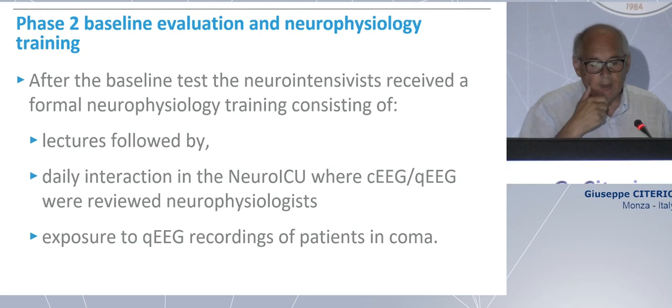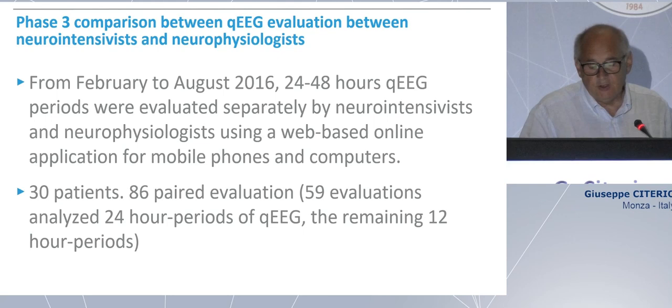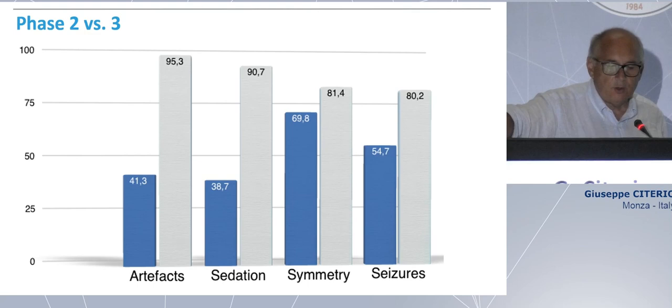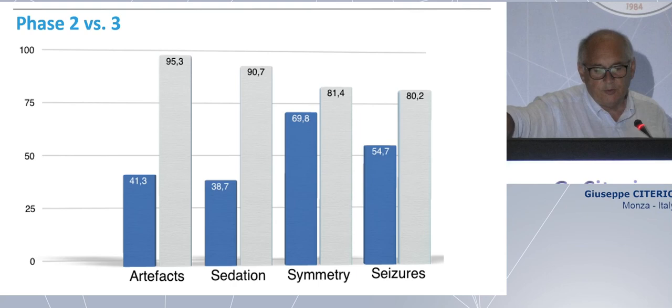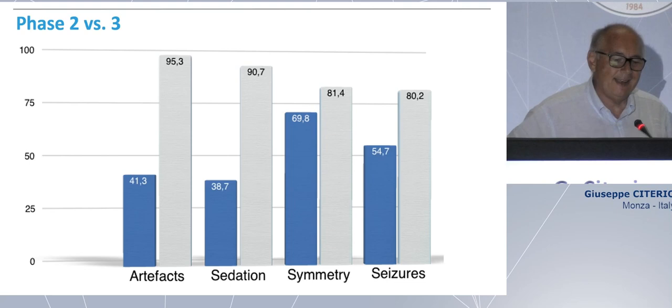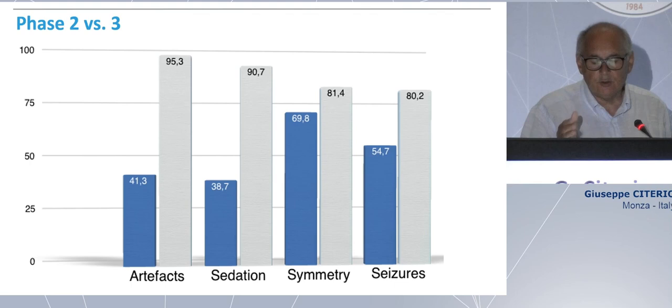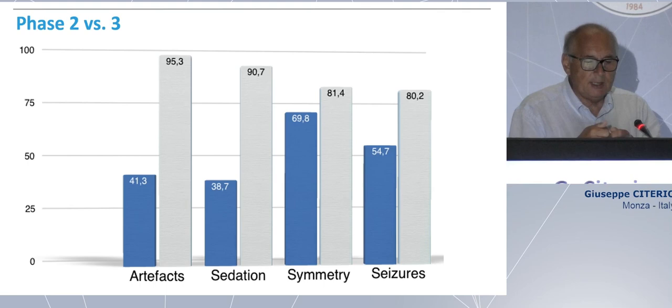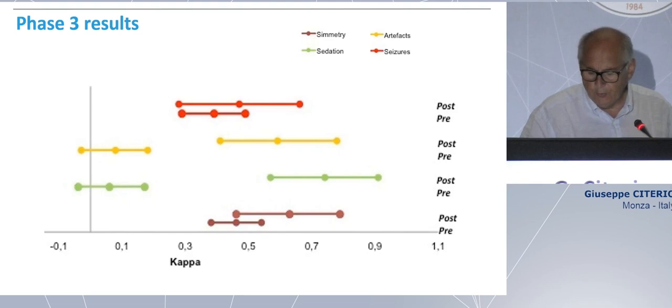The two neurophysiologists in the two hospitals gave some lessons to the doctors. They came to the unit every day for a long period, and we discussed the EEG findings with them. We were supposed to look at the QEEG in patients in coma — this was around six or seven years ago. We tested the possibility for us, after this training, to evaluate the four elements that were presented. We were not so good at first. After another training, we are much better in identifying the problem, and in 80% of the cases there was agreement between the neurophysiologists and the intensivists.